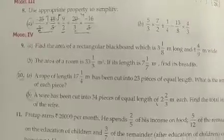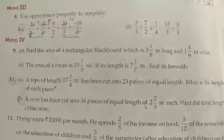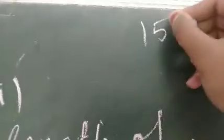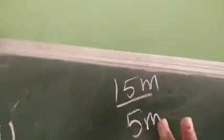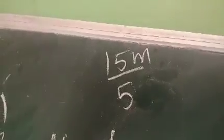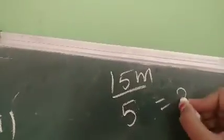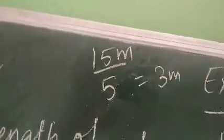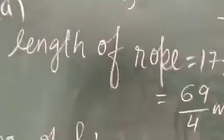Look, what is given to you? The total length of the rope and the number of pieces. For example, if you have 15 meters of rope and 5 pieces of rope, what do you do? Simply divide. Each piece is 3 meters in length. Same, we will do here.